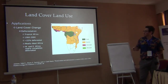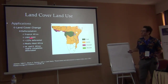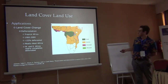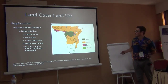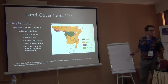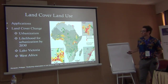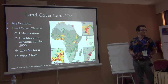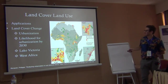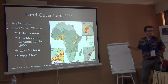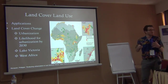Applications include land cover change — calculating deforestation. This study found that most deforestation in the past 100 years occurred in West Africa, with 22% deforested across tropical Africa over the last 100 years. For urbanization, we can identify places likely to urbanize by 2030 — around Lake Victoria and West Africa — helping us know where to put resources to manage urban sprawl.